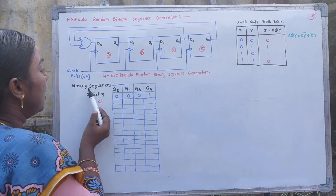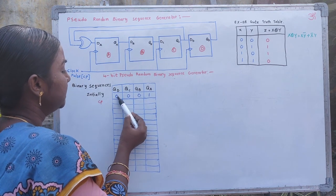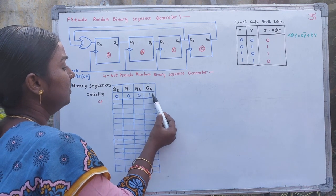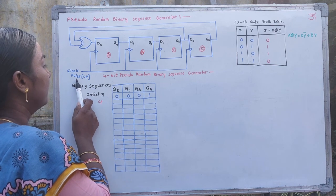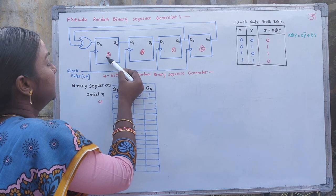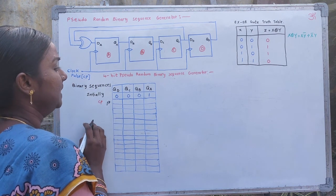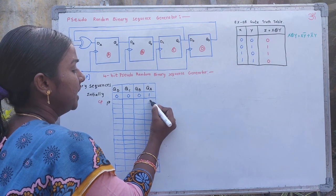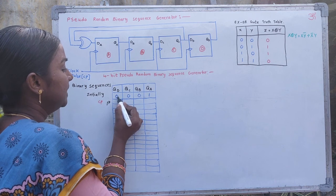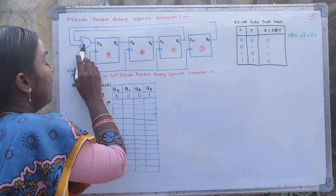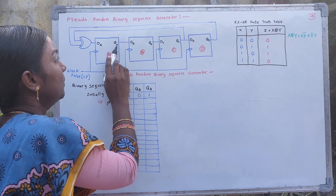Initially, the outputs of the 4-bit pseudo-random binary sequence generator QD, QC, QB, QA are considered as 0, 0, 0, 1. These are the bits before the clock pulse. After triggering the clock pulse, the generator starts working. After giving the first clock pulse, the QA output is decided by the previous bits of QC and QD. When these bits are 0, 0 and connected to the exclusive OR gate, it generates 0 to DA.